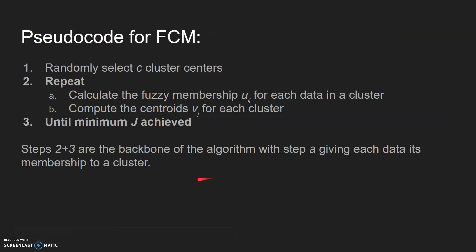The pseudocode for FCM is that in step one it randomly selects C cluster centers unless the user defines it. Then it repeats step two. Part A of step two is to calculate the fuzzy membership UIJ for each data in the cluster, compute the centroids VJ for each cluster, and then it stops when minimum J is achieved.